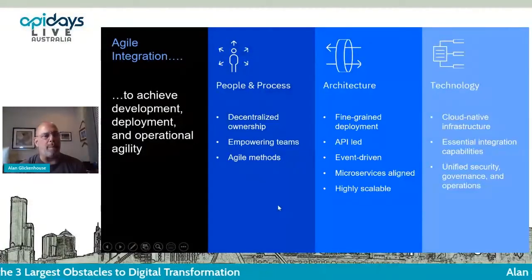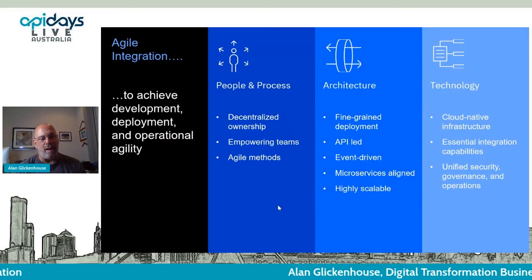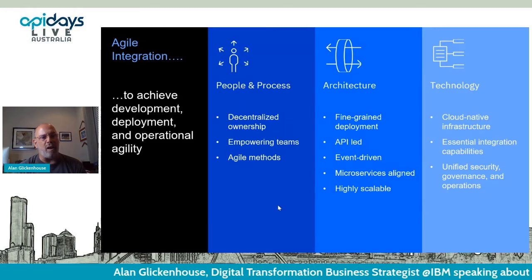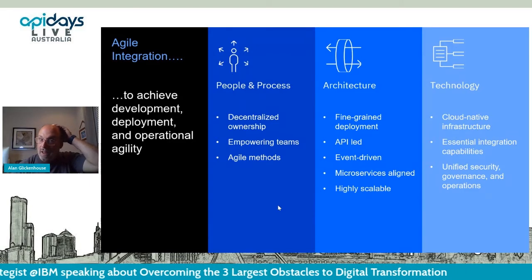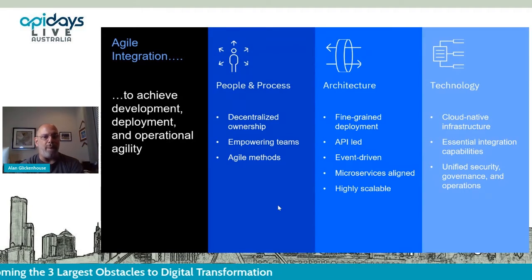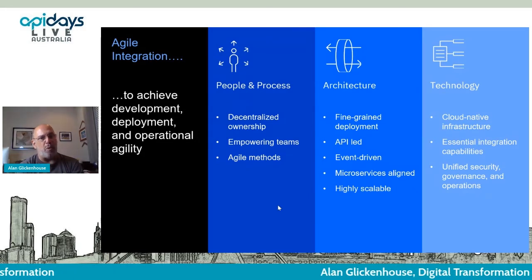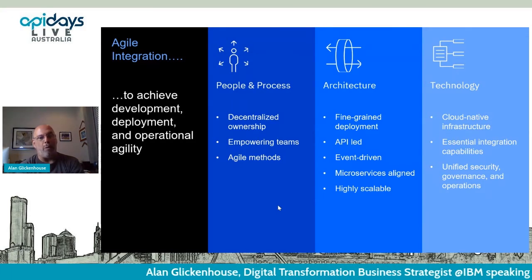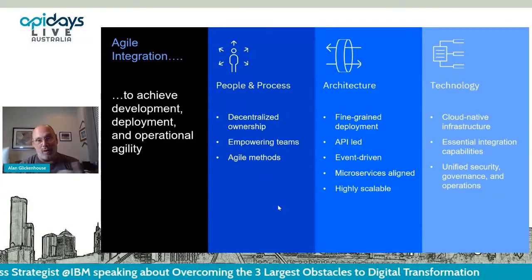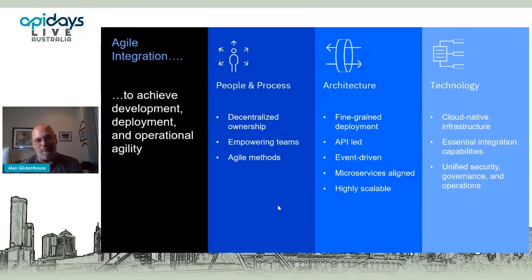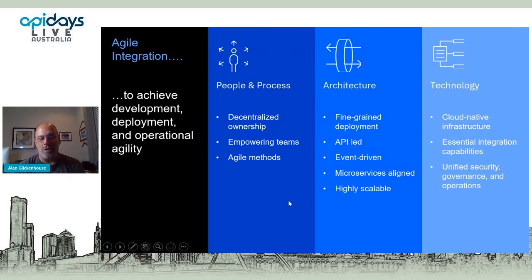What we need is agile integration — the ability to have the integration we need done in a quality-oriented way, but at greater scale. We need to decentralize ownership and empower teams. We want to use APIs, events, and microservices as an architectural style for fine-grained deployment and scalability, and be able to put this anywhere — on-premise, Amazon, Google, IBM cloud — or multiple of those. Someone I met at an API Days conference was moving between clouds as each vendor offered financial incentives to do so.